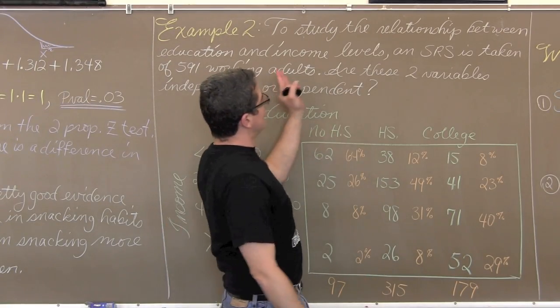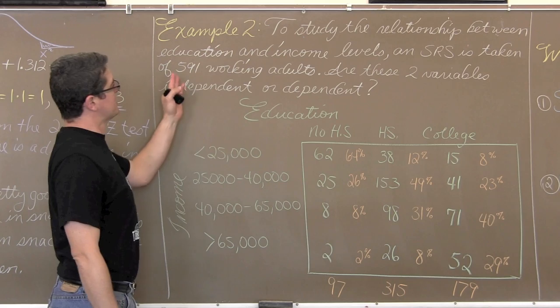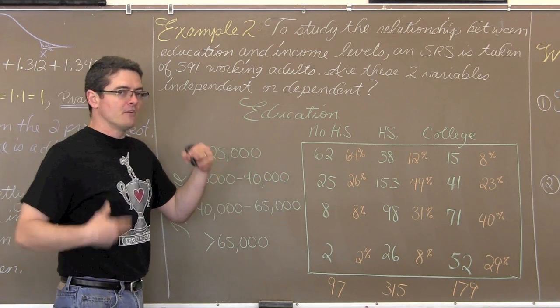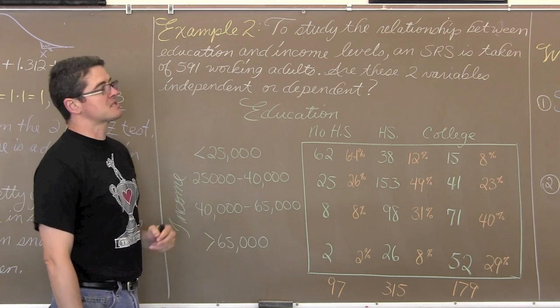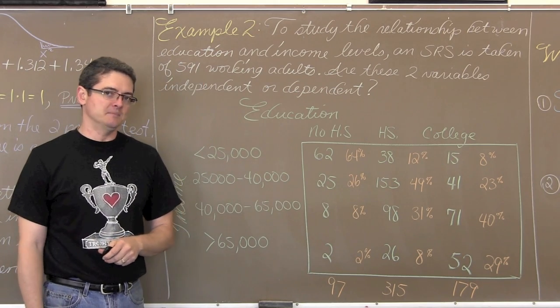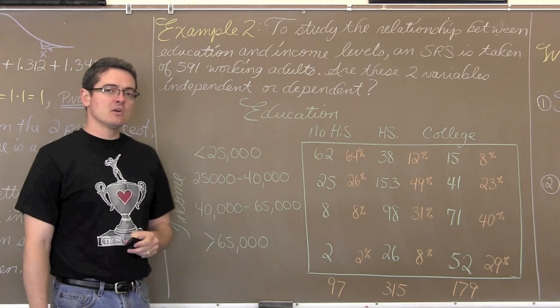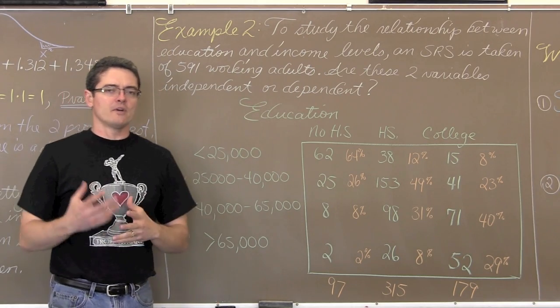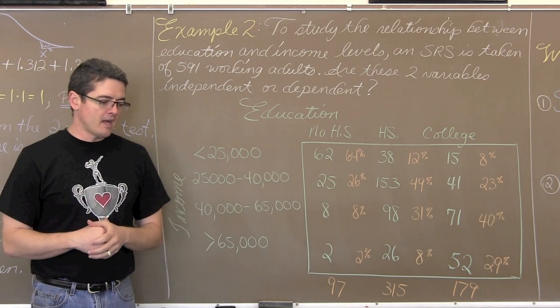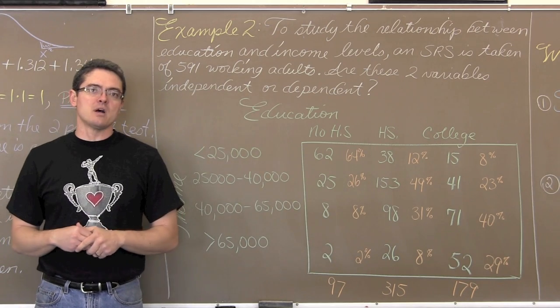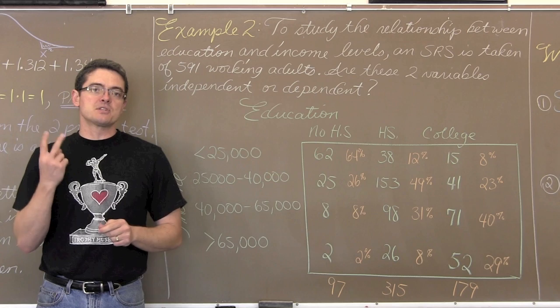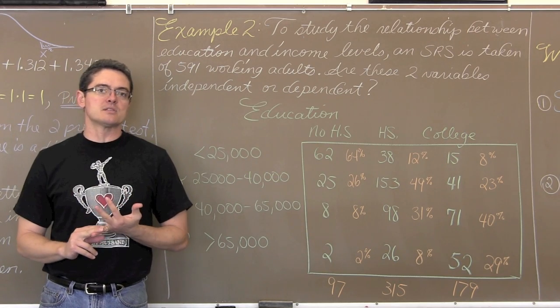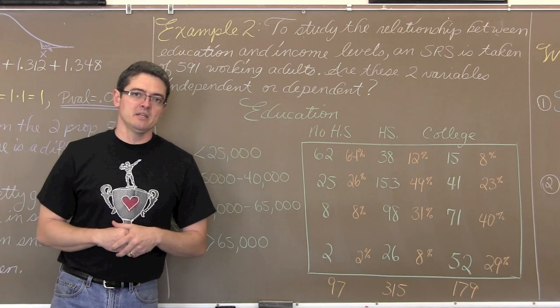In our next example we want to study the relationship between education and income levels. So we take a single SRS of the population of all working adults, size 591. Are these two variables independent or dependent? I am making these questions up. I am sure in your textbook you will have a bit more of a wordy setting. I just want to emphasize here though that we are talking about one sample being taken as opposed to two samples being taken like in our first example where we had a SRS of men and then another SRS of women and those were independent of each other.